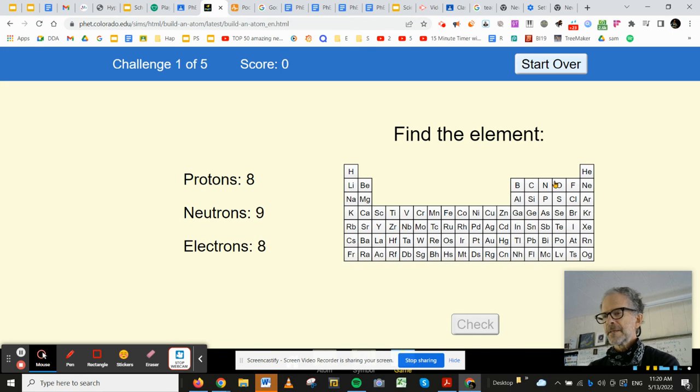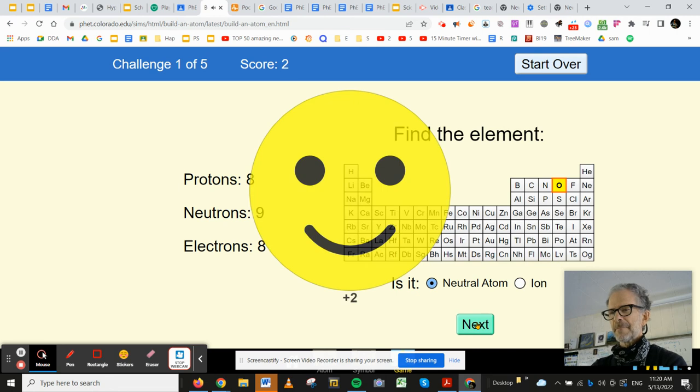It's oxygen so you click on that and then it asks you is it neutral or an ion. Well the number of protons and electrons are the same and whenever that is, it's neutral. When it's not even, it's an ion. Ion means that it's a charged atom. So let's check and that is basically how you do it.